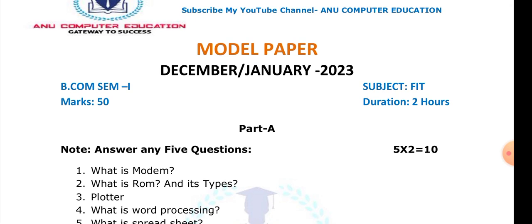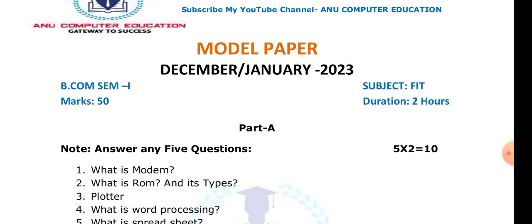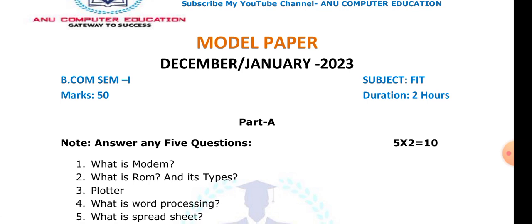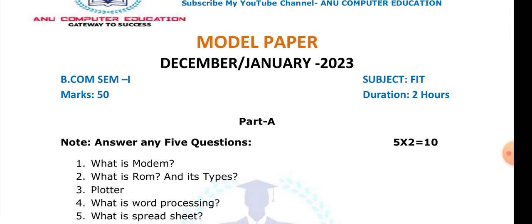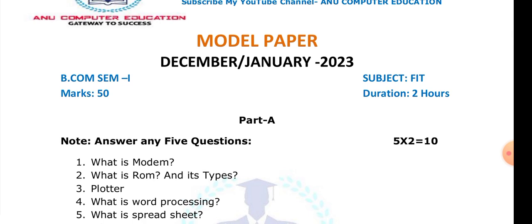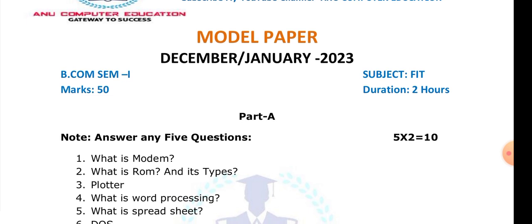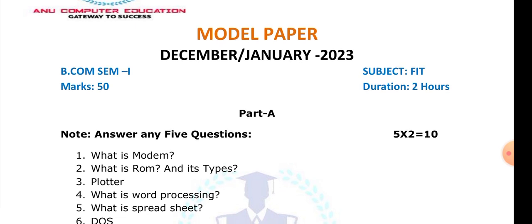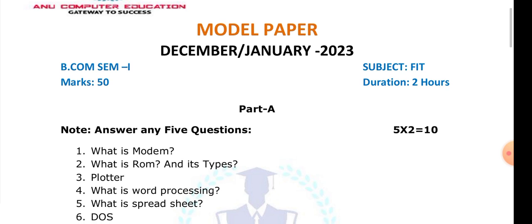Next, plotter is an output device. With the help of a plotter we can draw diagrams and pictures — you have to write that. The next important question is what is word processing — used to prepare documents. Next, spreadsheet is nothing but Excel — write the definition of what a spreadsheet is and what we can do in it. Then what is DOS — DOS is nothing but Disk Operating System, and it is a single user operating system.